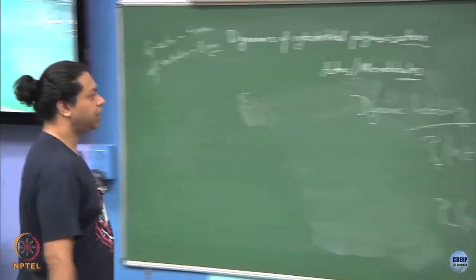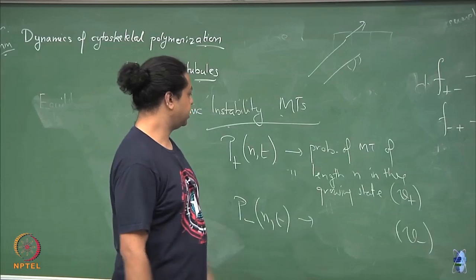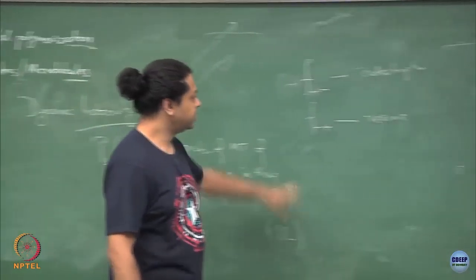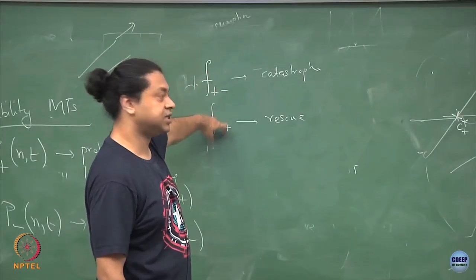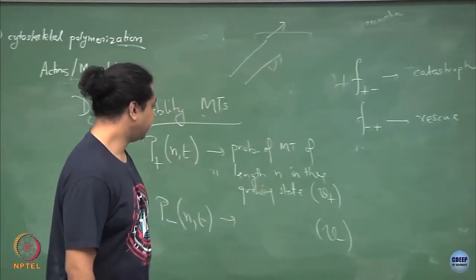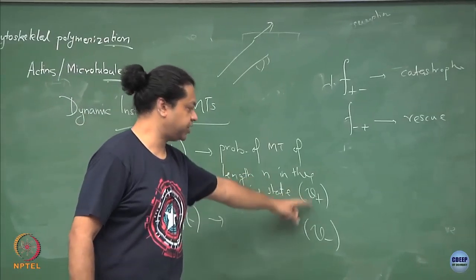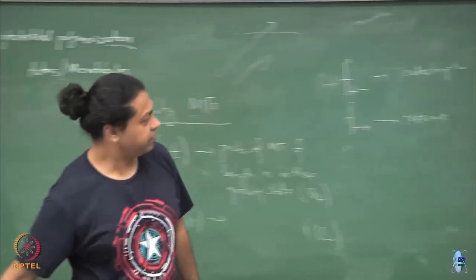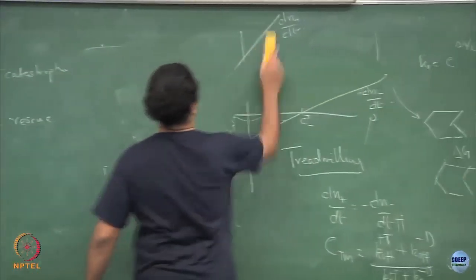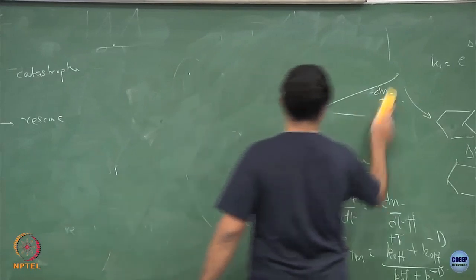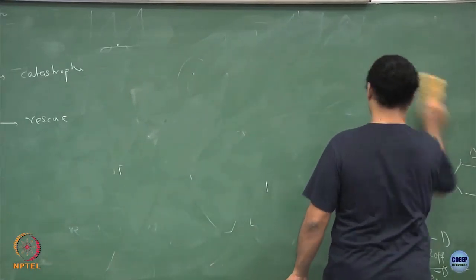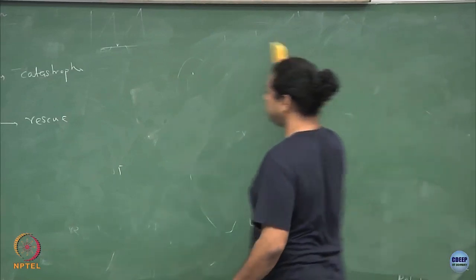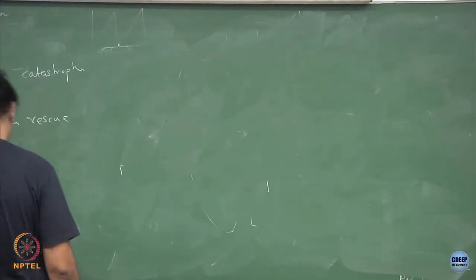That is my full model. My microtubules can exist in two states, given by the probabilities P-plus and P-minus. They can switch between these states with rates f-plus-minus and f-minus-plus. And in each of these states they grow or they shrink with velocity V-plus or V-minus. Given this, I can write down how these probabilities will evolve with time.